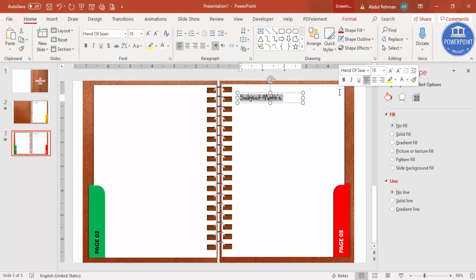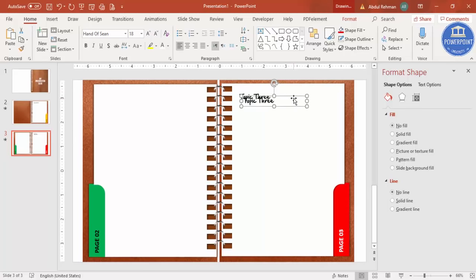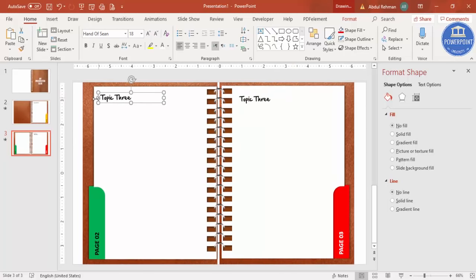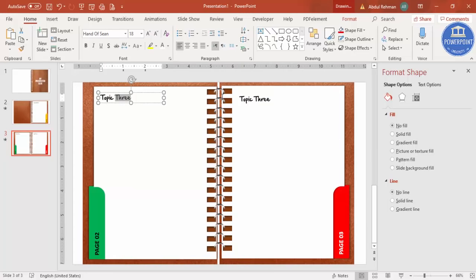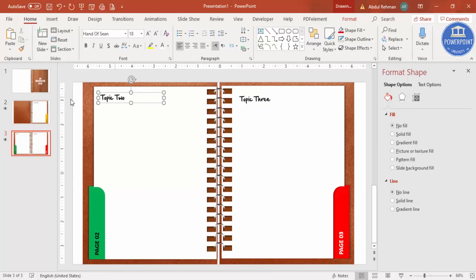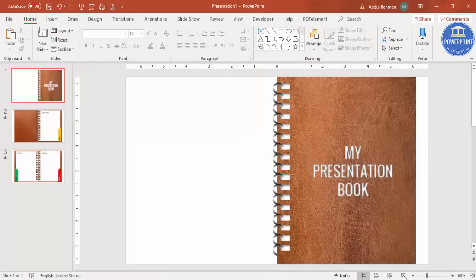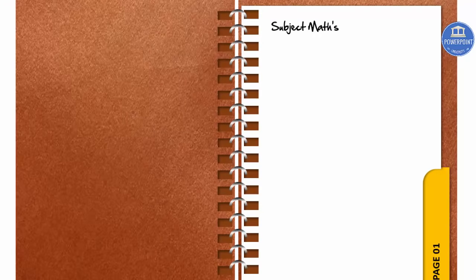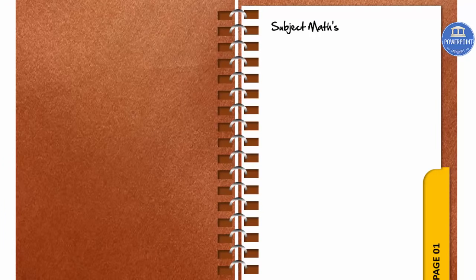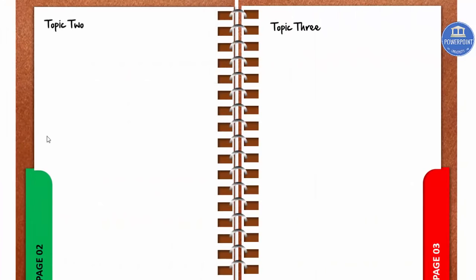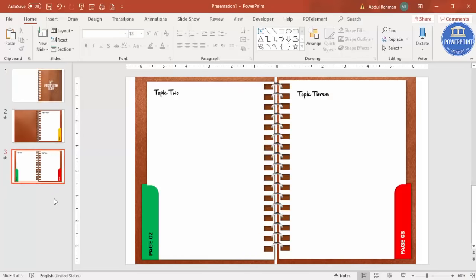Now if I play through the presentation: this shows the first page, you can see the page number one. When I click, page number one becomes page number three. You can add as many pages as you want — that number of pages you can add.